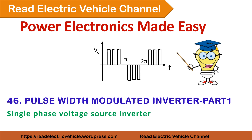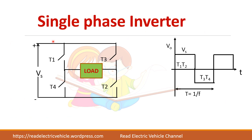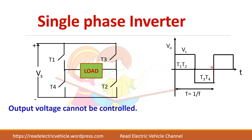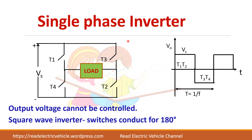Let us see about PWM inverter. We have already seen the single phase inverter which consists of four devices T1, T2, T3, and T4. This inverter cannot control the output voltage because the magnitude is fixed at supply voltage Vs. If you want to change the magnitude, you have to change the supply voltage. This type of inverter is called a square wave inverter because the switches conduct for the whole 180 degrees.